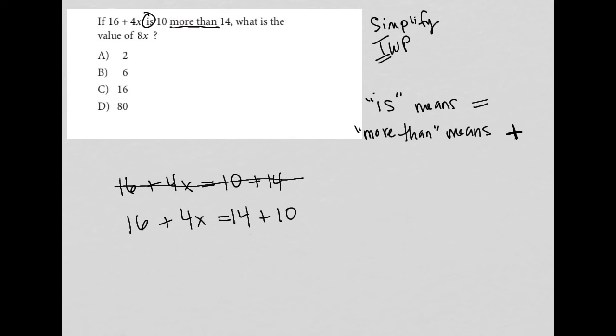So then here comes the simplification part. So we have 16 plus 4x equals 14 plus 10, which is 24.